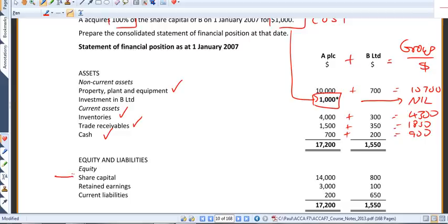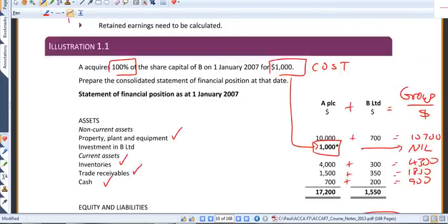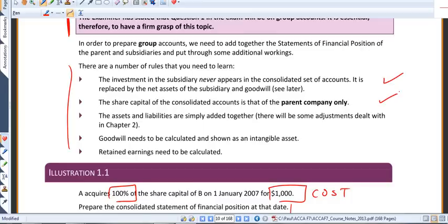If we look at the next line down, share capital, share capital isn't added across. The share capital of the parent becomes the share capital of the group.